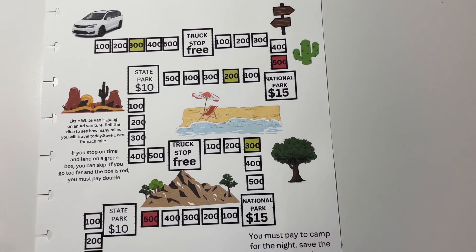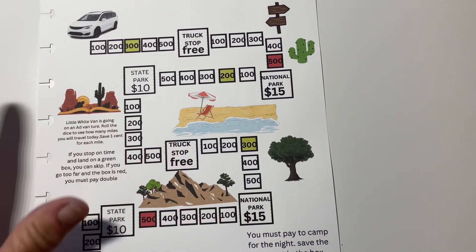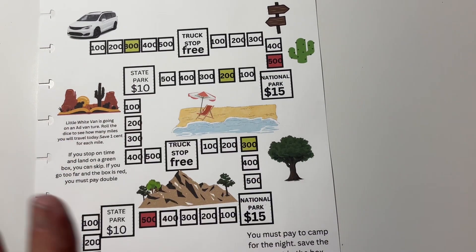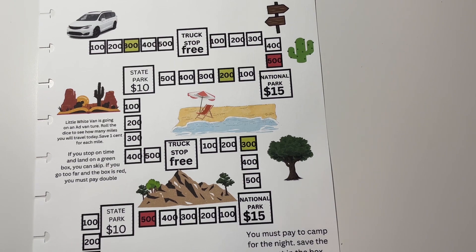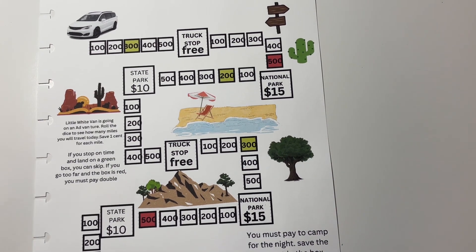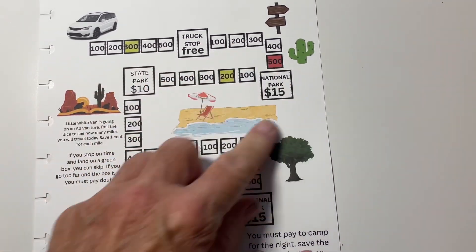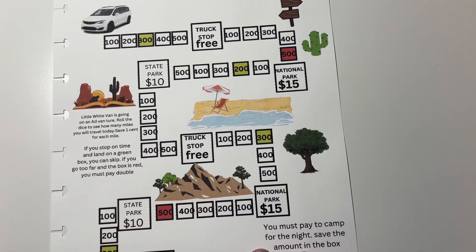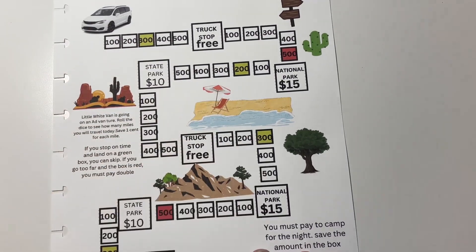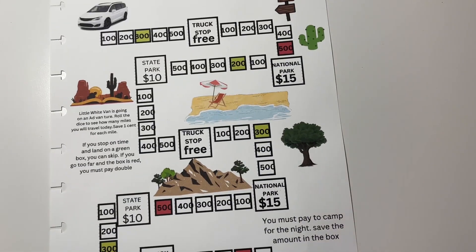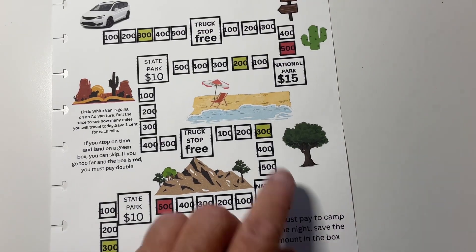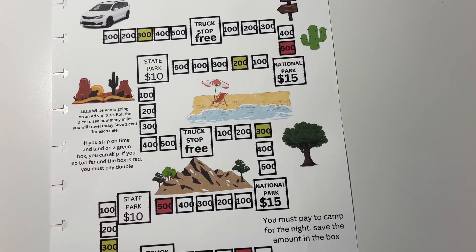You're going to roll the dice. And if you stop before you hit a red, which means that you have traveled a safe distance for the day and have not been driving tired, then you just pay the amount on the space. If you stopped early because you were being very cautious and you land on a green square, then you can skip that if you would like. If you travel too far and you land on a red, you need to pay double.